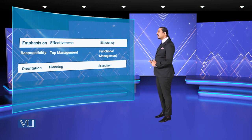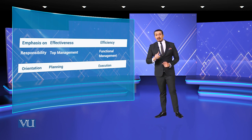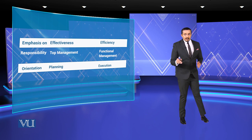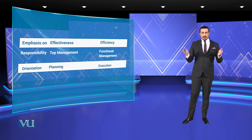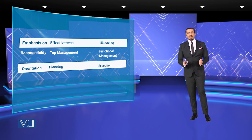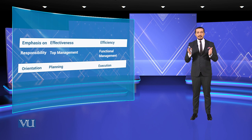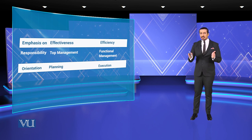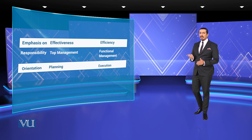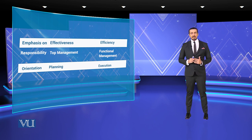Orientation is planning, and execution is the part of implementation. Implementation is carried out by the hierarchy under middle management, while formulation is under the planning phase — meaning it belongs to top management. This is how we connect strategy formulation into the implementation phase. Thank you very much.